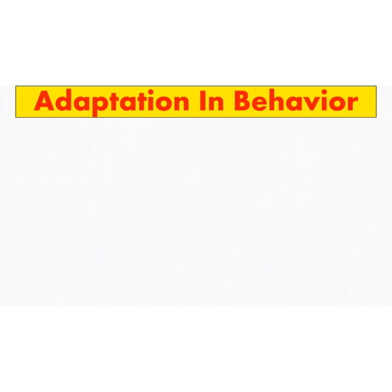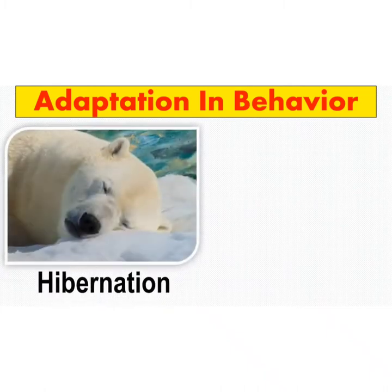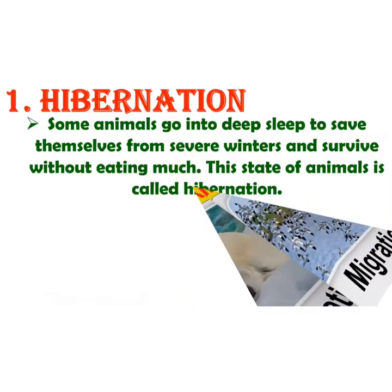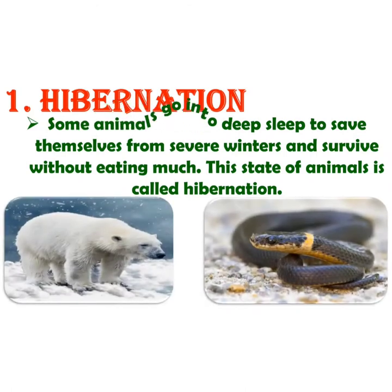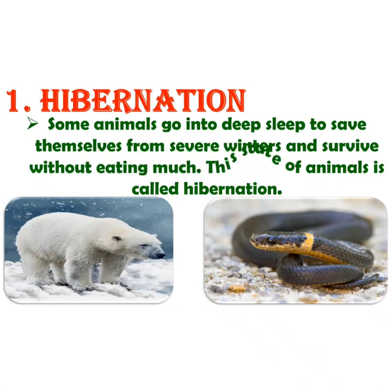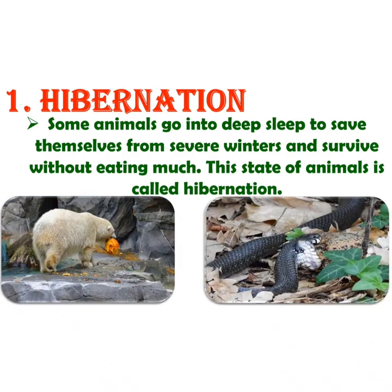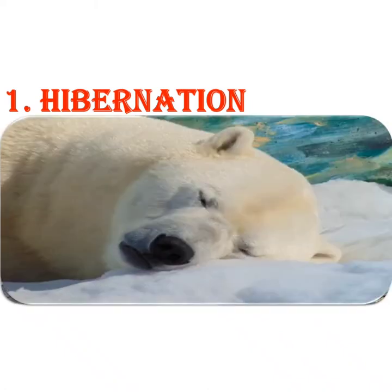Next is adaptation in behavior. Some animals have different types of adaptation to survive in extreme weather conditions. First is hibernation: some animals go into deep sleep to save themselves from severe winter and survive without eating much. This state is called hibernation. Some animals like bears and snakes eat more food than usual during the autumn season and store it as fat to use during winters when they go into hibernation.